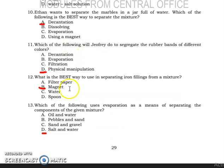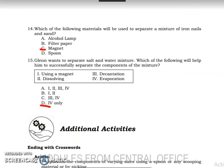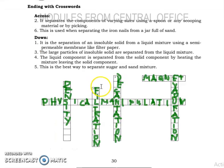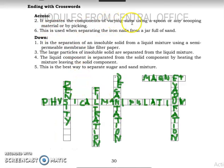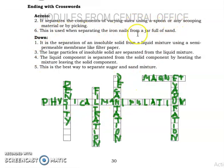These are the answers from item number 13. For numbers 14 and 15: separating components of iron using a spoon is physical manipulation; using a magnet is used when separating iron; separation of solid from liquid uses decantation — answers one, three, and four.